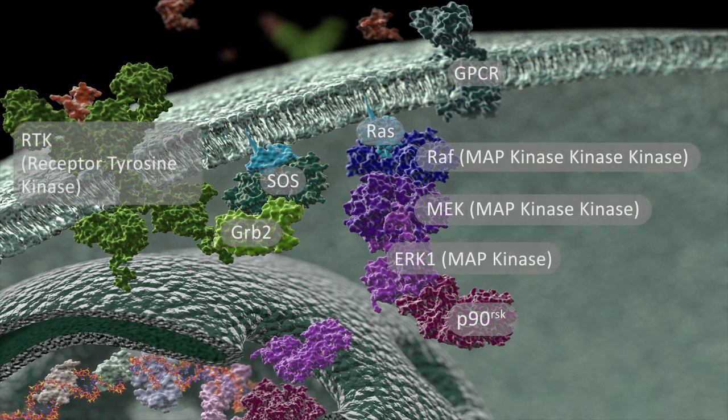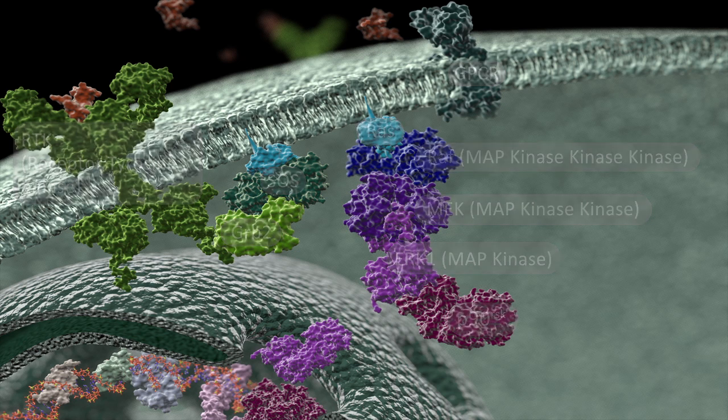Mitogen-activated protein kinase, or MAPK signaling pathways, play an important role in signal transduction in eukaryotic cells, where they modulate events including cell cycle progression, development, apoptosis, and differentiation.